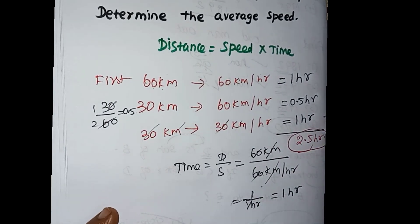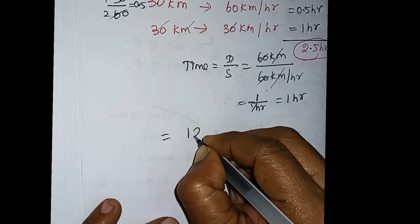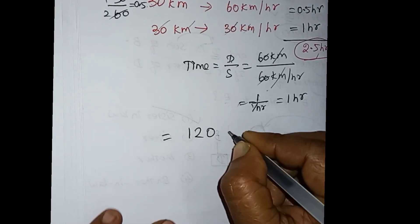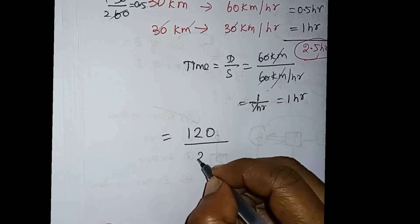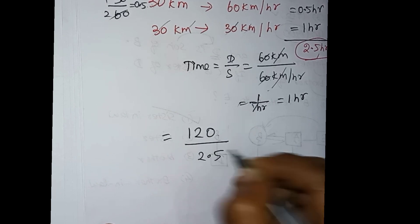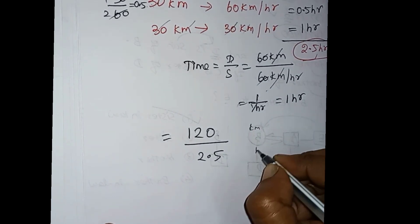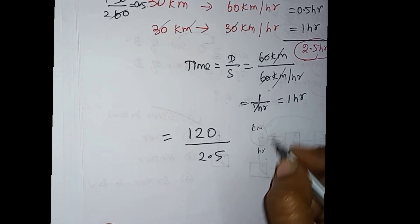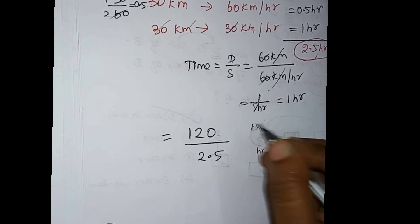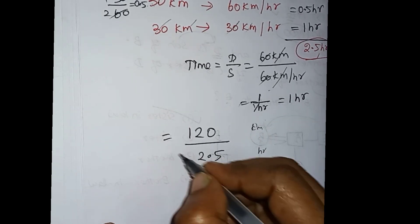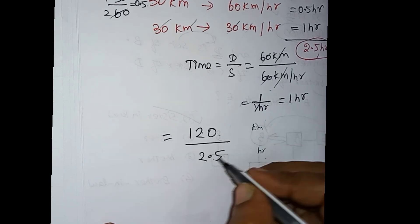The total distance is 120 km and the total time is 2.5 hours. Therefore, the average speed equals 120 divided by 2.5, which gives us 48 km per hour.